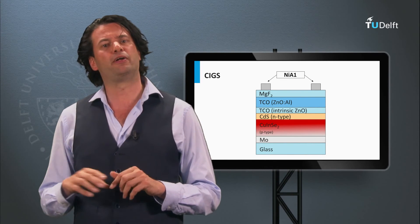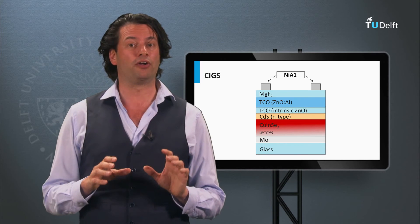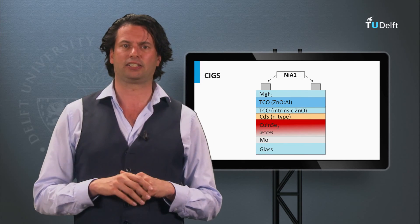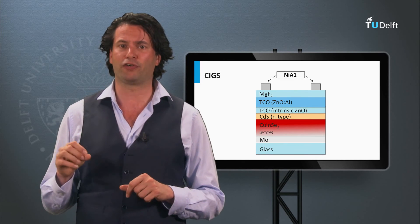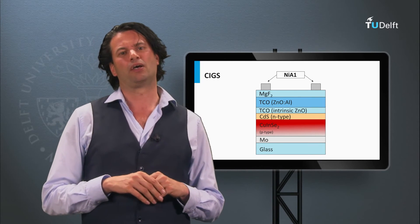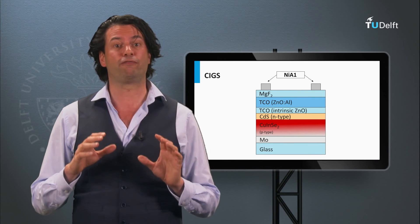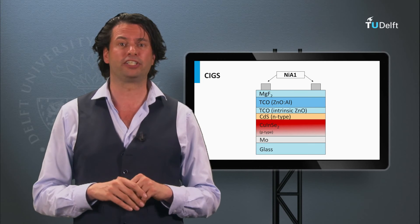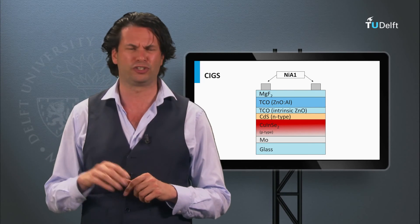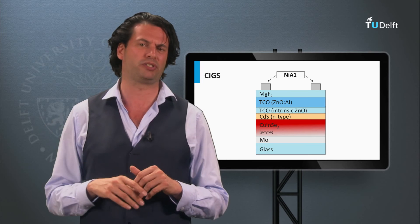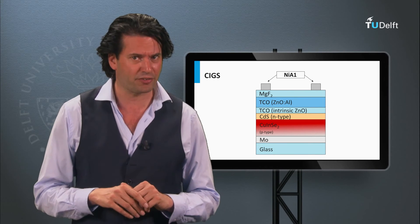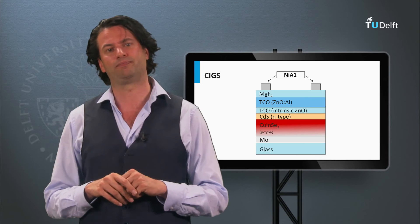Another thin film PV technology based on a chalcogenide alloy is CIGS, which stands for copper indium gallium selenide. Among the thin film PV technologies it has the highest demonstrated conversion efficiency on lab scale, just above 20%. It belongs to second generation PV technology as well.